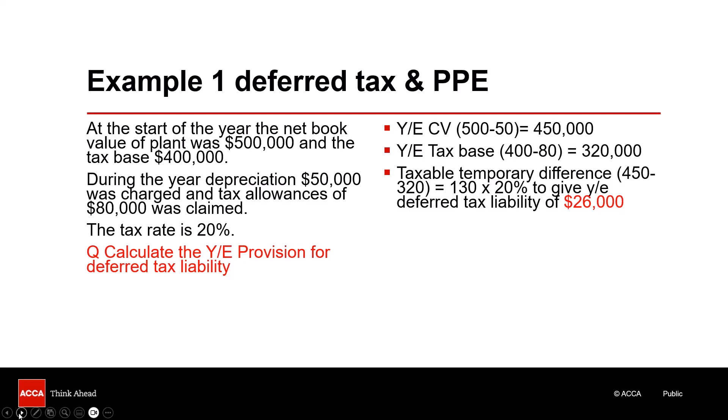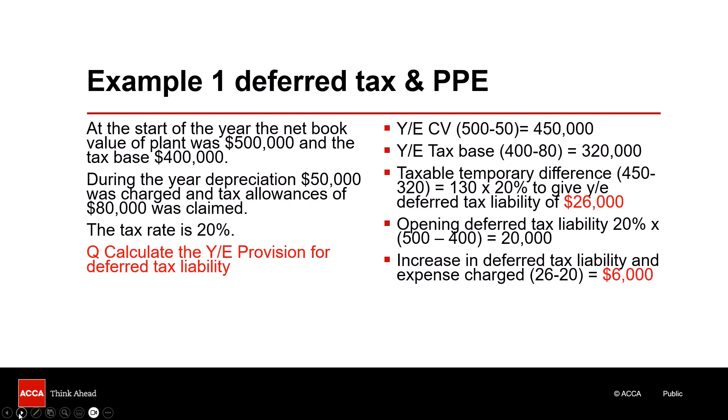I want to also show you what happens in the profit and loss account. We already have an opening taxable temporary difference — at the beginning of the year, carrying value exceeded tax base by 100 (500 vs 400), giving an opening deferred tax liability of 20. From a P&L perspective, if you've already got a liability of 20 and you need 26, you're increasing it by 6. Your additional deferred tax expense — the debit and credit — is 6: you're charging profit and increasing the liability.